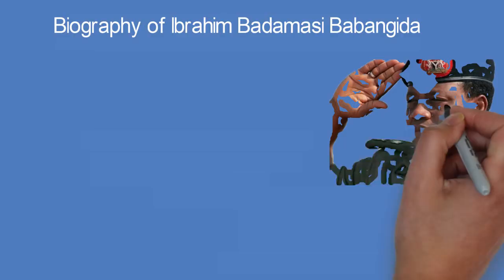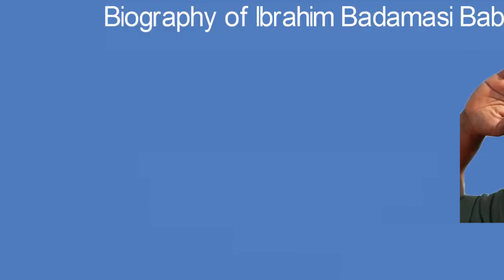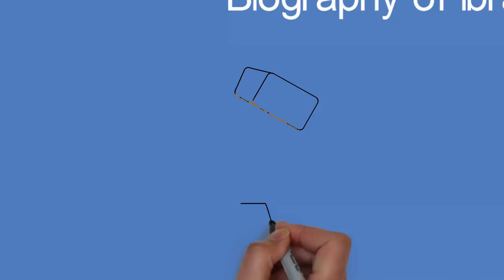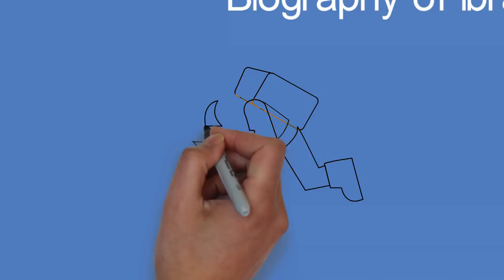He was born in Mena, Niger State on 17th of August 1941. He was Chief of Army Staff from January 1984 to August 1985 before becoming the Military President of Nigeria.